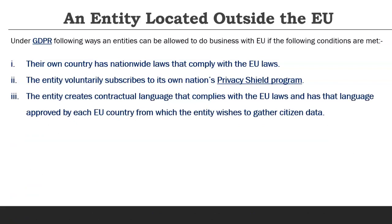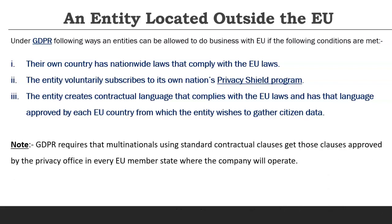The third way is for the entity to create contract language that complies with EU laws and is approved by each European country whose citizens' data the entity wishes to process. For example, if a company outside the EU wants to do business with three European countries, the contract language must be approved by each of those countries. GDPR requires that multinational companies using standard contract clauses get them approved by the privacy office in every EU member state where they operate.